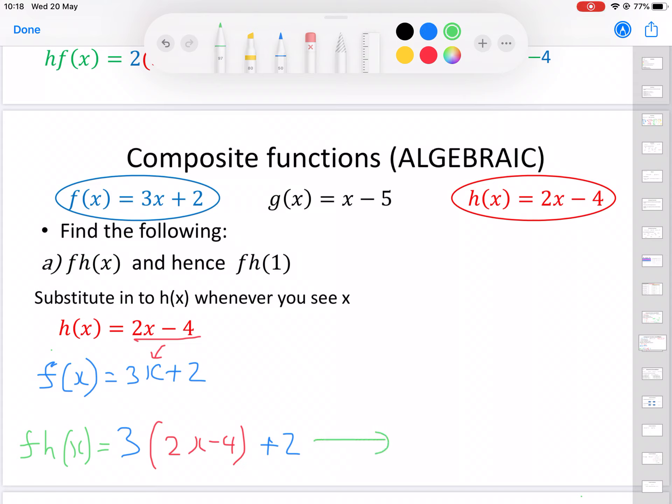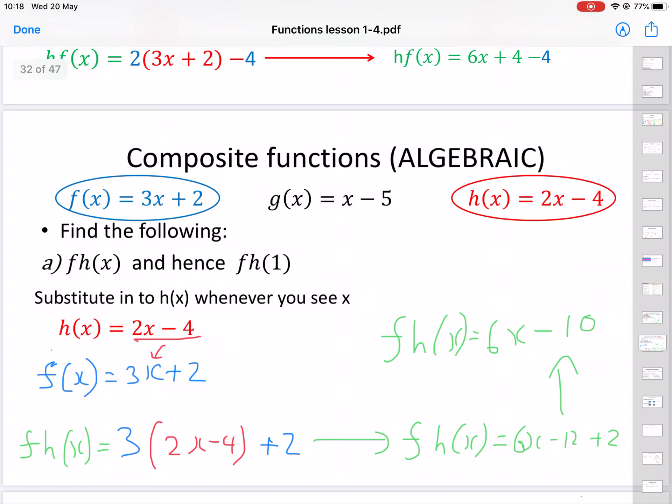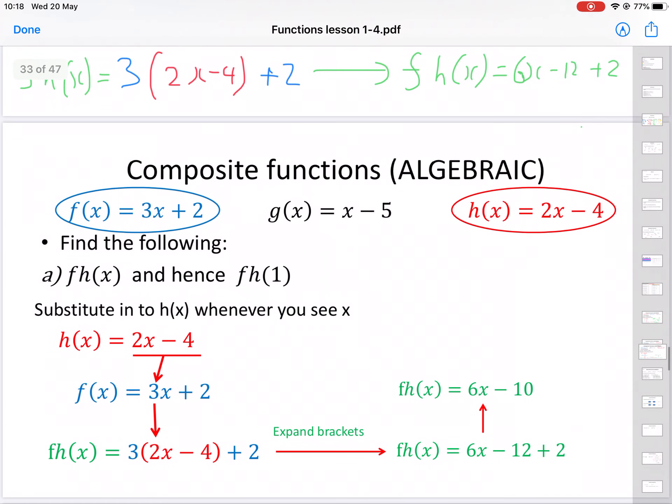Now we just have to simplify this up a little bit. So fh(x), expand the brackets, so 3 times 2x is going to be 6x, 3 times minus 4 is minus 12, and then we've still got the plus 2. Simplify it up again, so we've got 6x - 10. So fh(x) is 6x - 10. And there we have it.